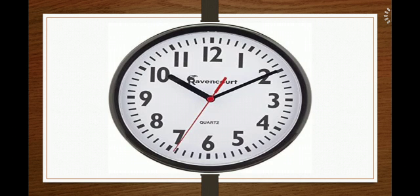However, a clock or a watch gives us the accurate time. Time is divided into hours, minutes and seconds. There are 60 seconds in a minute and 60 minutes in an hour.